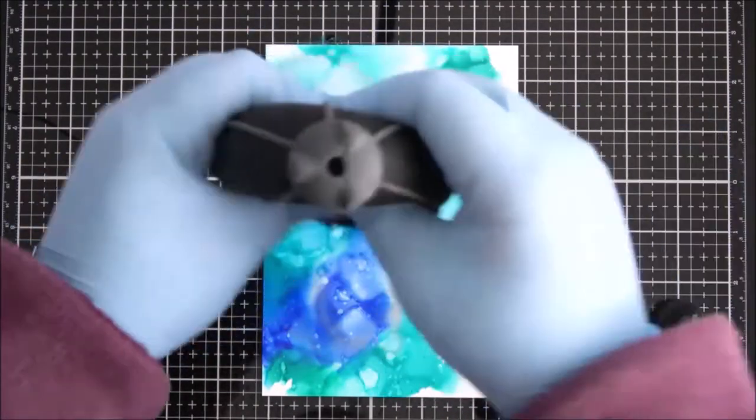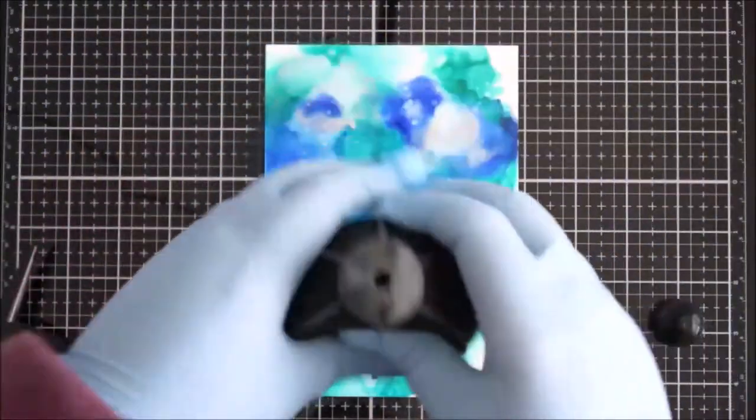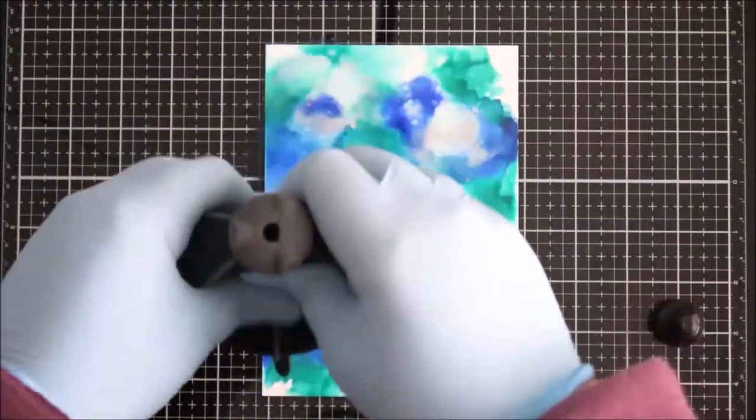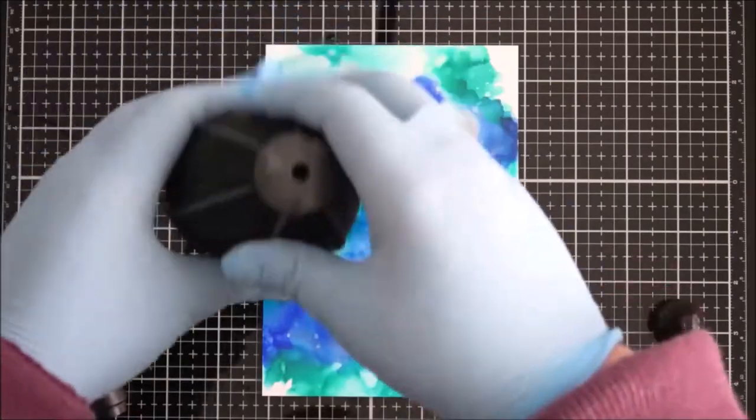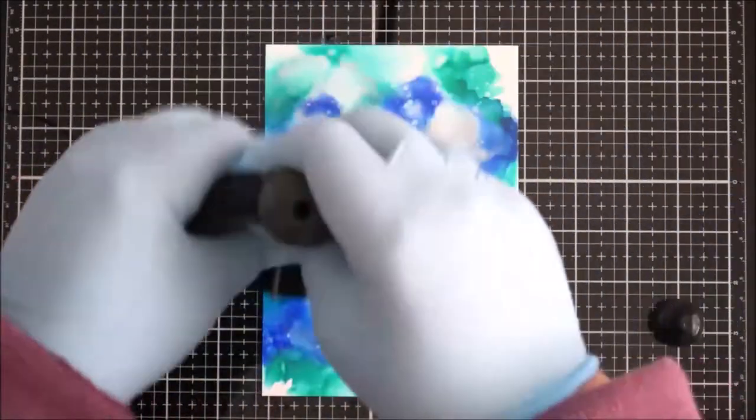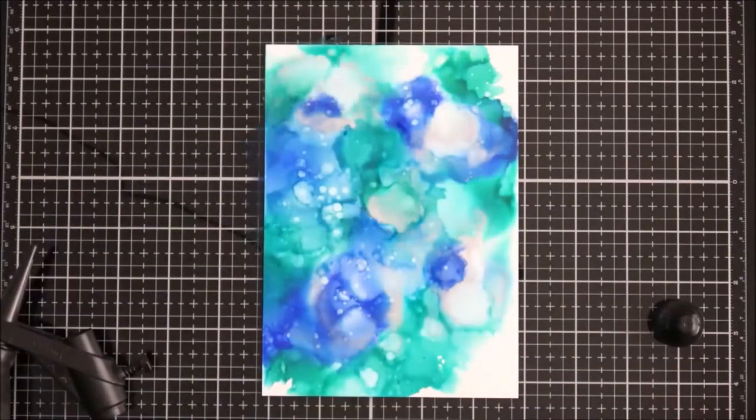I added some blending solution over the top once I had added them onto my panel and that kind of just helped move them around but it did end up a bit blobby. But on my next panel I kind of got the look that I wanted so it's all about experimenting with these kinds of things.